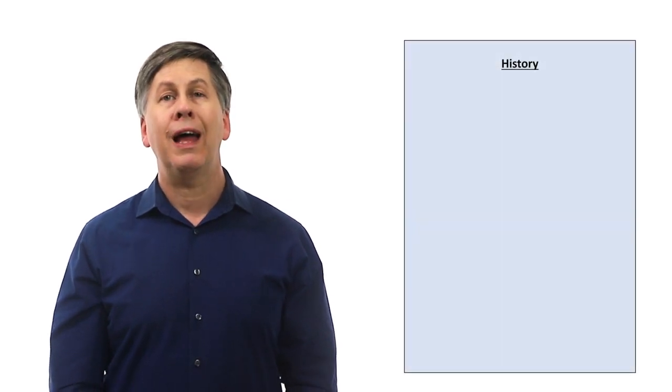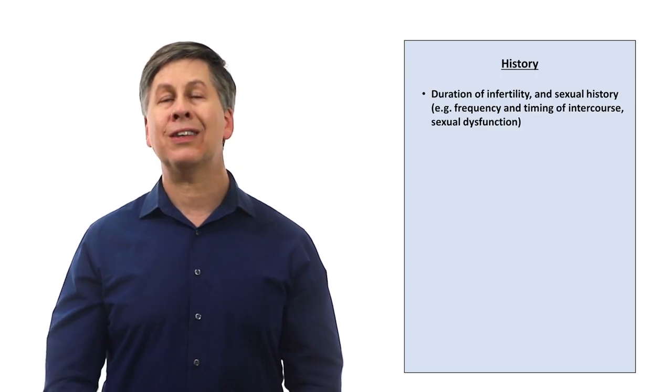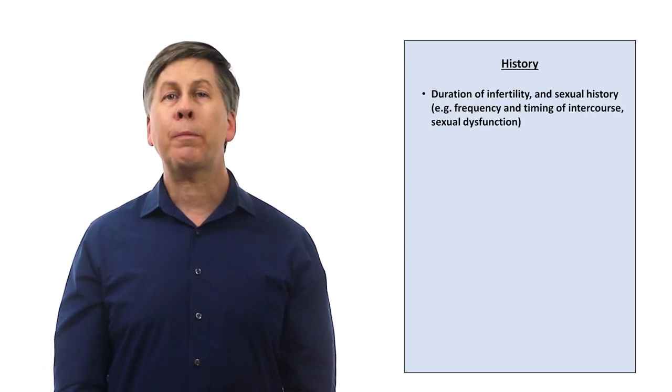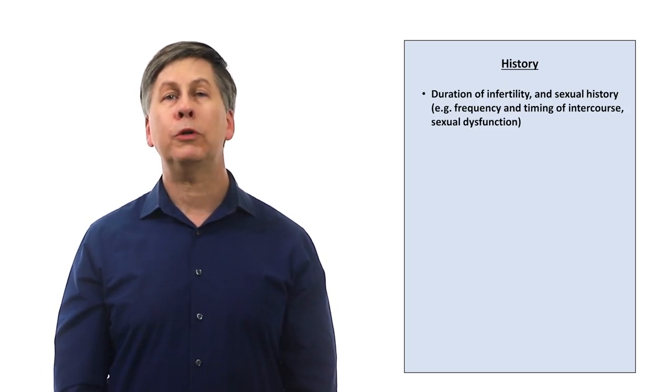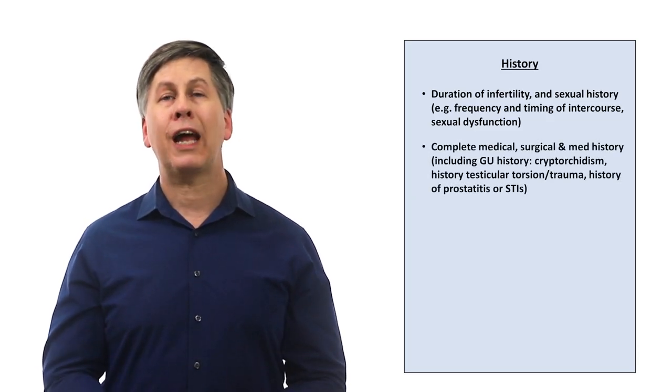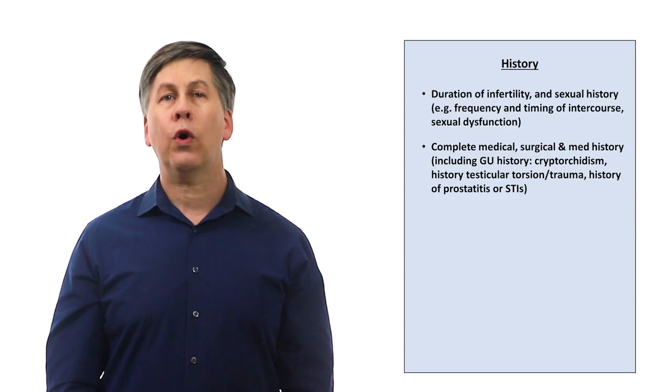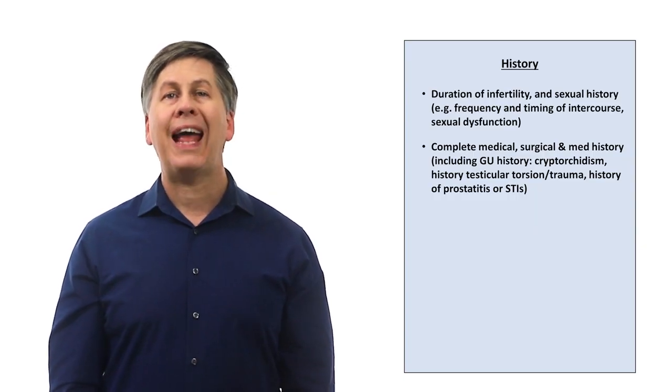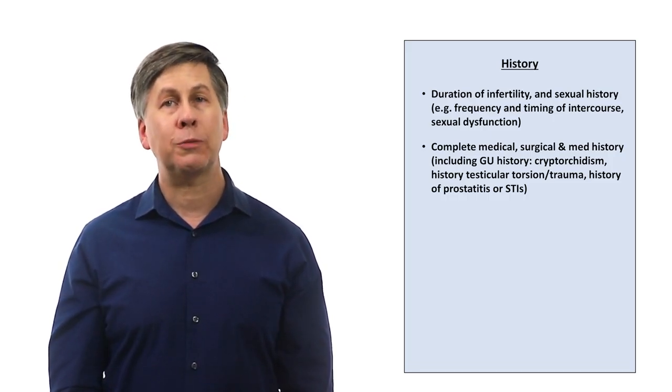How do we evaluate the male partner of a couple experiencing infertility? Starting with the history, ask about the duration of infertility and take a sexual history, including the frequency and timing of intercourse, and the presence of any form of sexual dysfunction, such as erectile dysfunction or premature ejaculation. A complete medical and surgical history, including a thorough GU history. This includes a history of cryptorchidism, or undescended testes, a history of testicular torsion or trauma, and a history of prostatitis, or sexually transmitted infections.